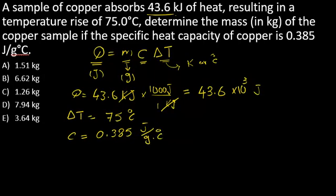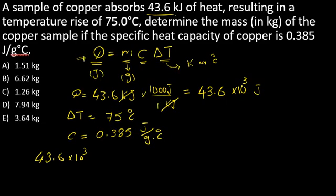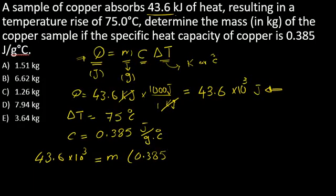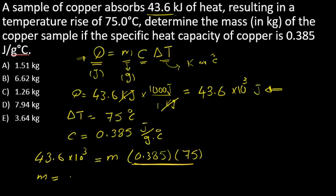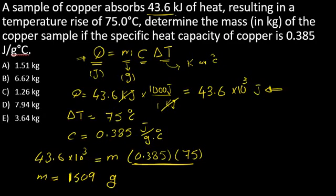Plugging into the equation: 43.6 × 10³ = M × 0.385 × 75. Dividing both sides by 0.385 and 75 gives M = 1509 grams. Remember, this equation gives mass in grams, but the question asks for kilograms.